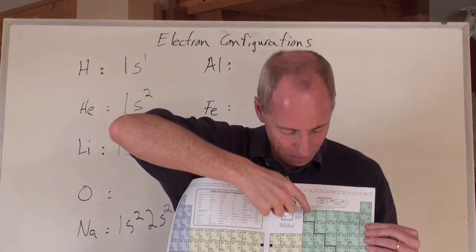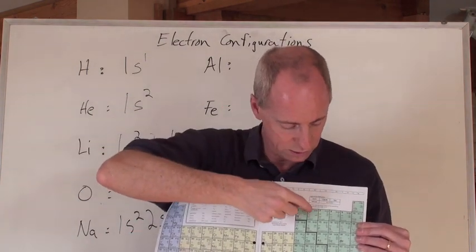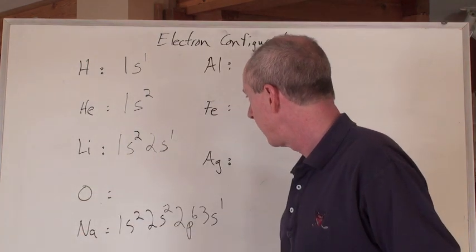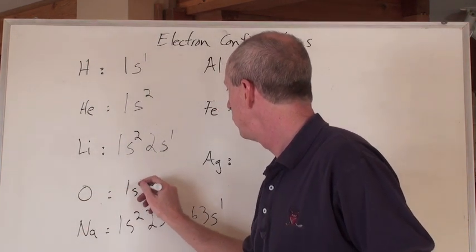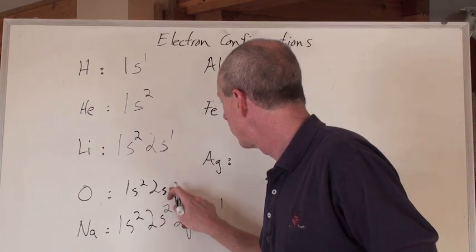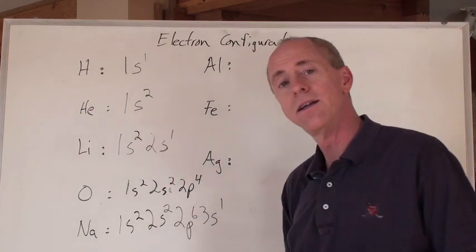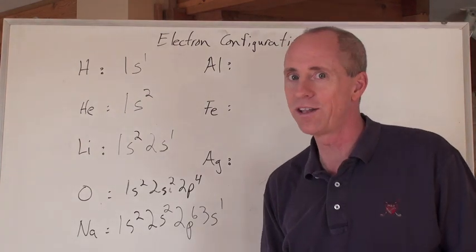We get 2P, 1, 2, 3, 4 because it's the fourth one over. So it's 1S2, 2S2, 2P4. That's what oxygen is. Oh, that's very cool.